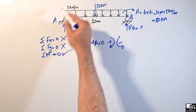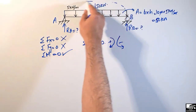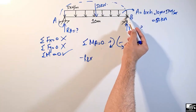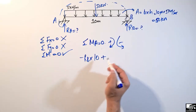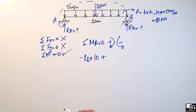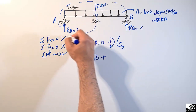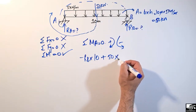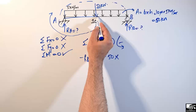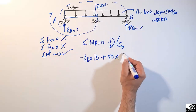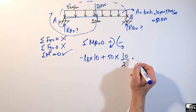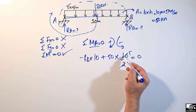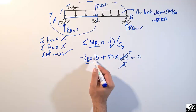RB creates a counterclockwise moment about point A, so it is negative: minus RB multiplied by the distance from B to A, which is 10 meters. The 50 kilonewton load acts downward and creates a clockwise moment about A, so it is positive: 50 multiplied by its moment arm of 5 meters (half of 10 meters). Setting the summation of all moments equal to zero gives us the equation.